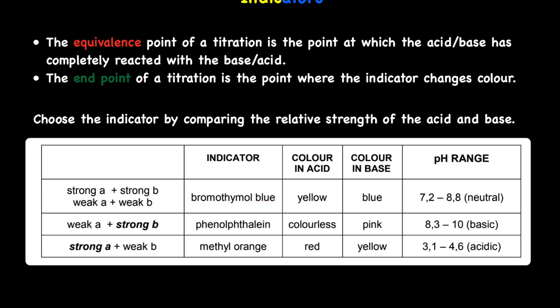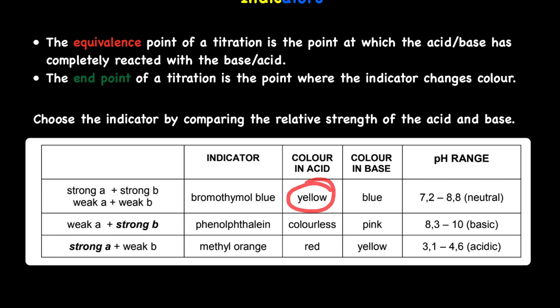Bromothymol blue works in these situations: if it's a strong acid and a strong base, we use bromothymol blue — strong acid with strong base, use bromothymol blue. The color of bromothymol blue in an acid is yellow, and in a base it's blue. The pH range of that solution is 7.2 to 8.8, which is neutral.